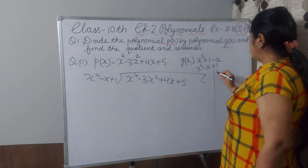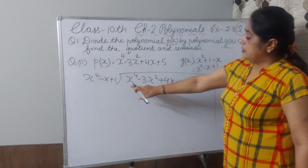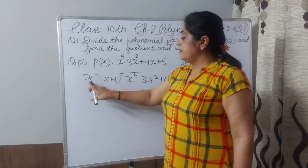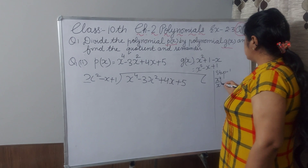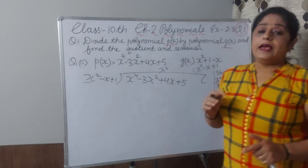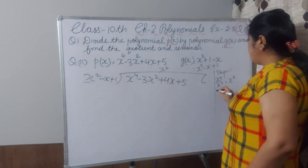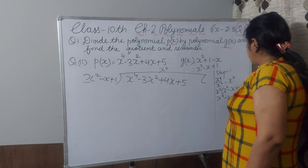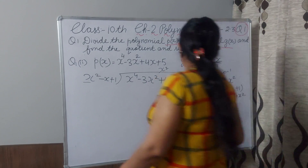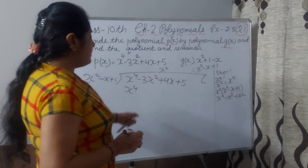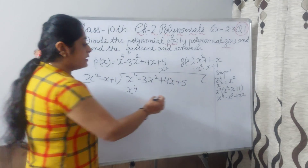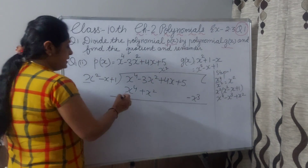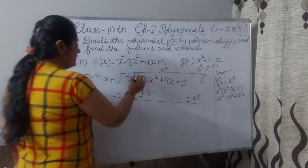Step 1: the dividend's first term is x⁴. The divisor's first term is x². x⁴ divided by x² gives x². Write x² in the quotient. Next step: multiply x² by the whole divisor x² minus x plus 1 — you will get x⁴ minus x³ plus x². Now write x⁴, then x³ (note x³ is not present in the dividend so write it separately), and plus x². Now change the sign: x⁴ becomes minus, minus x³ becomes plus, plus x² becomes minus. x⁴ will be cancelled.